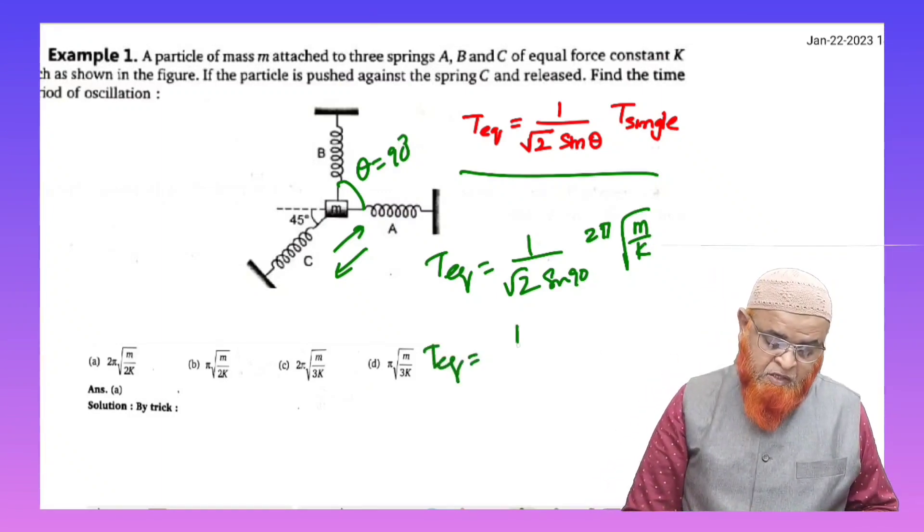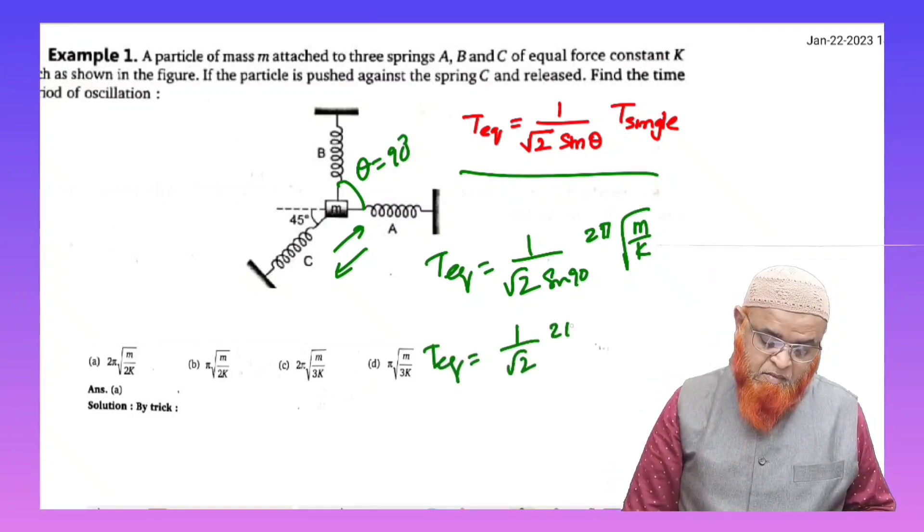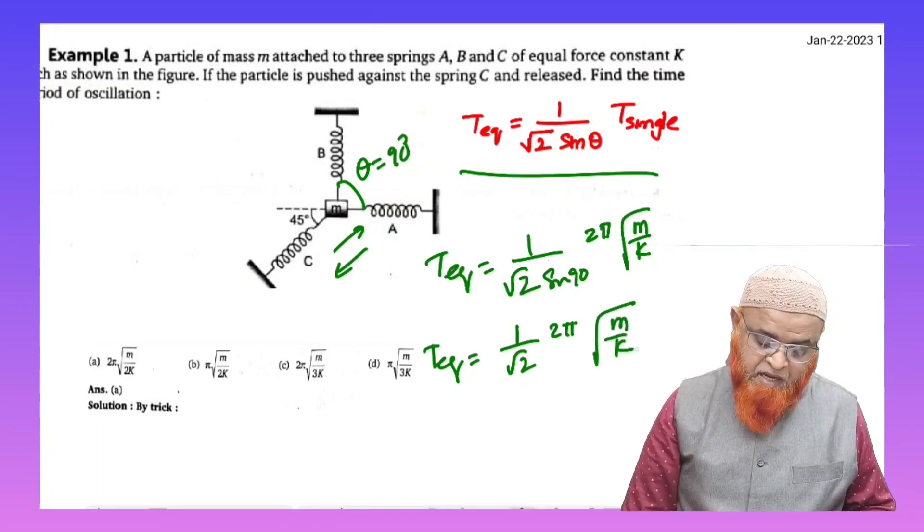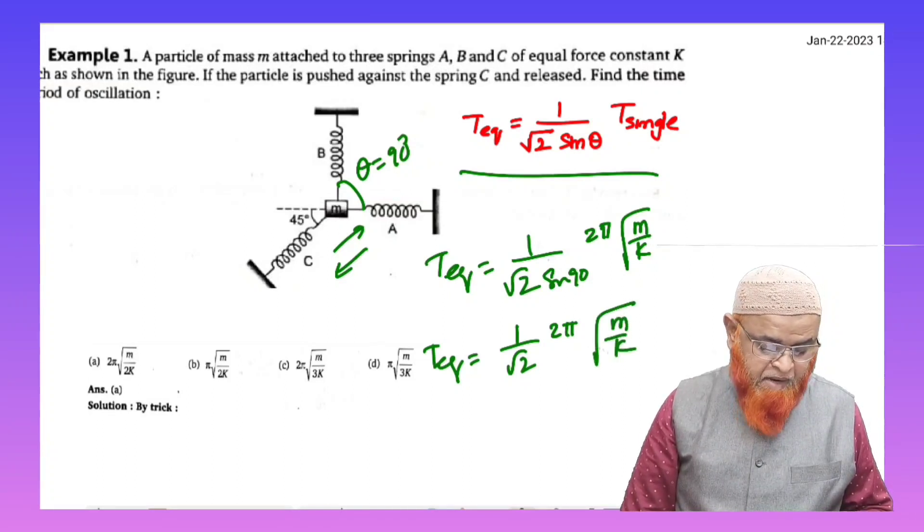So sine 90 is going to be 1, so therefore T equivalent is nothing but 1 by root 2, 2π√(m/k) here.